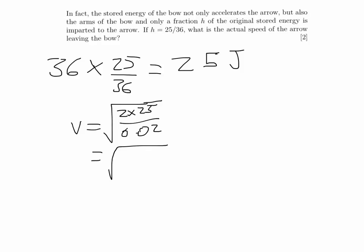So we're just going to use the same equation that we used before. And the only difference is, instead of 36, we're using 25. And when we put those numbers in, we end up with the square root of 2,500. Square root of 2,500 is 50 metres per second.